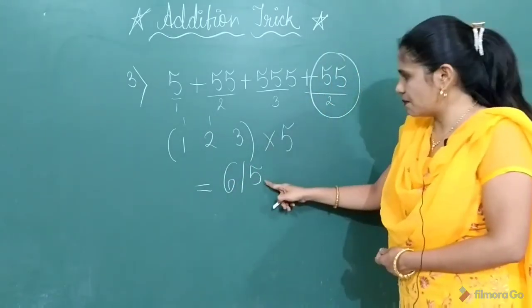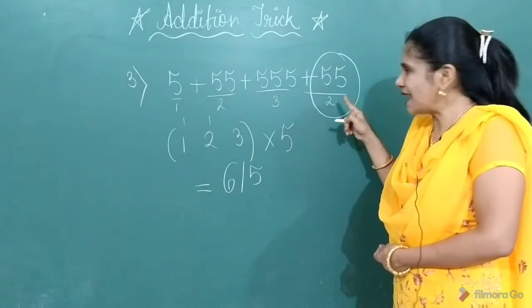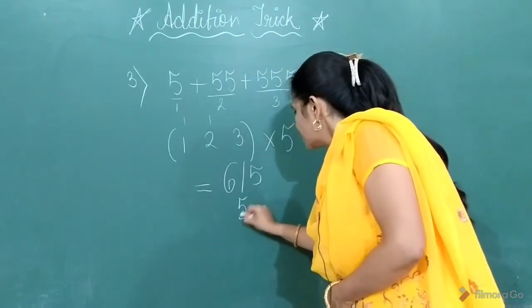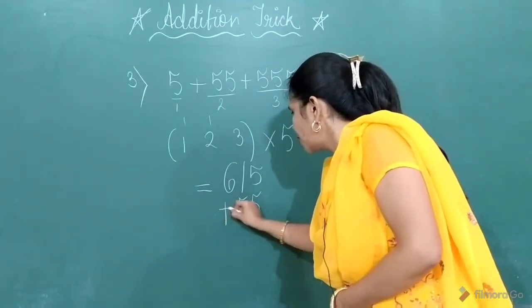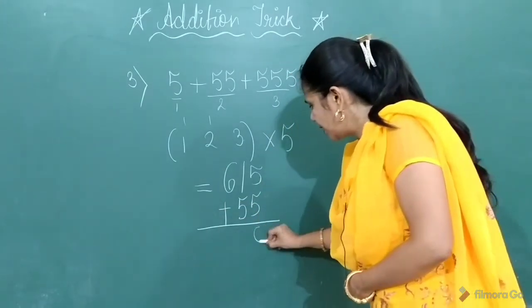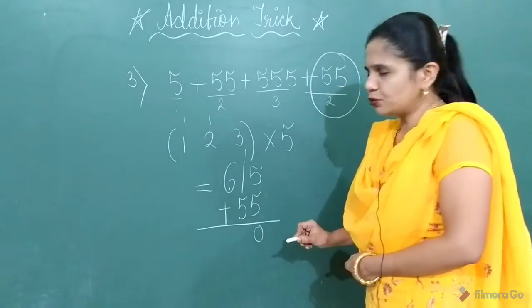Now in this number, you are going to add the number which you have kept separately. So in 615, you are going to add 55. So what you will get? 5 plus 5, 10. 1 will carry to the next group.